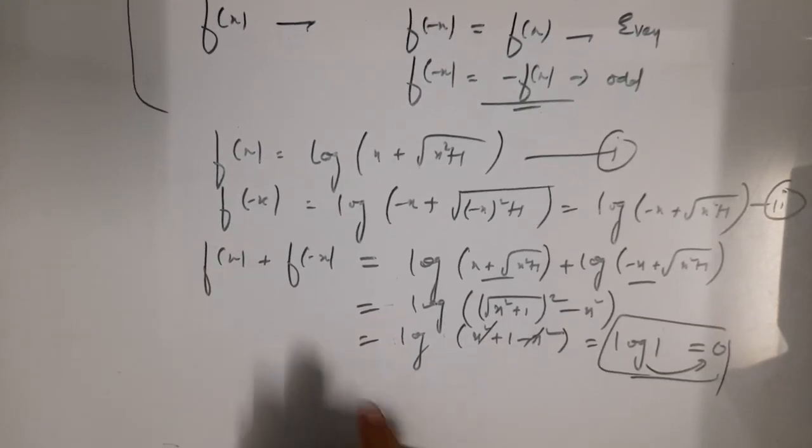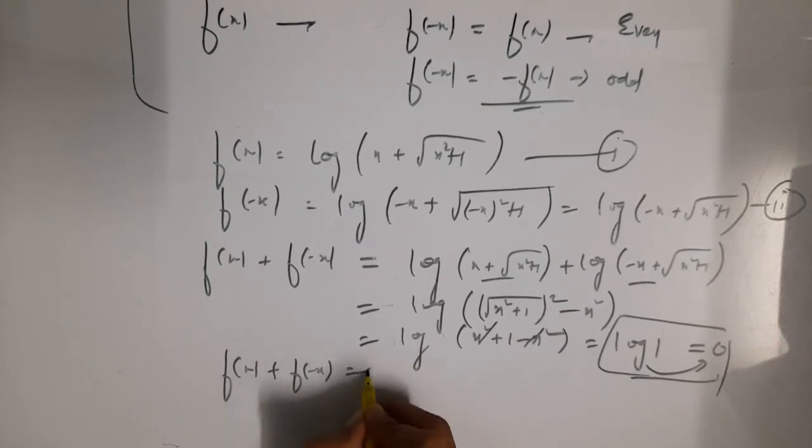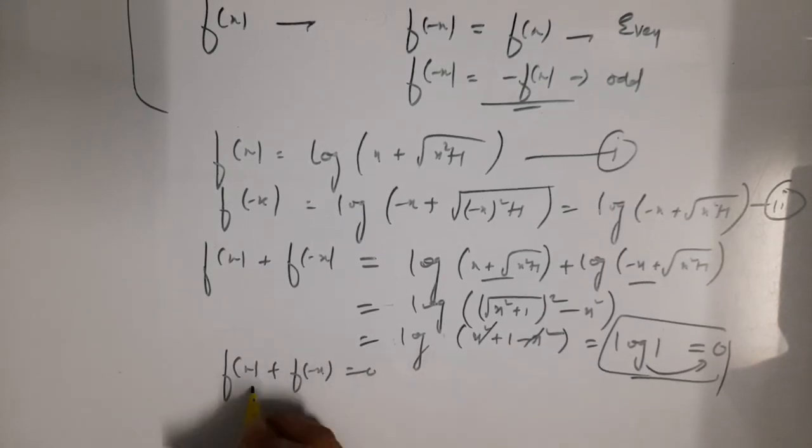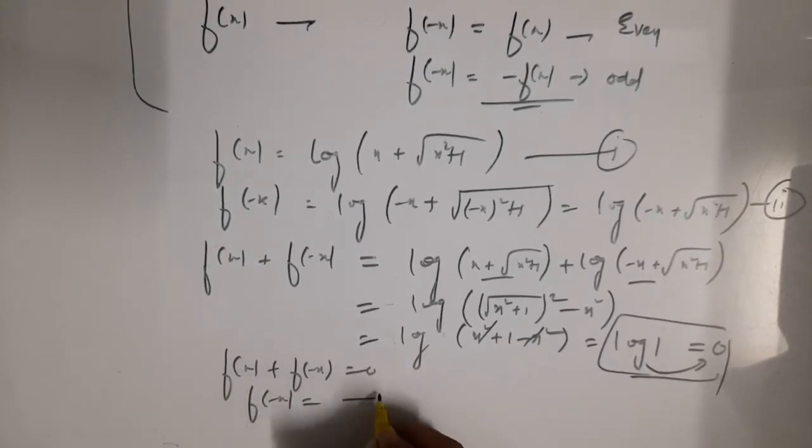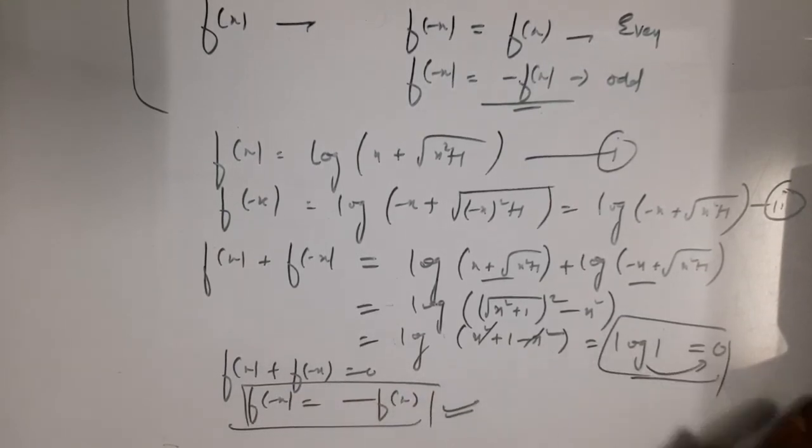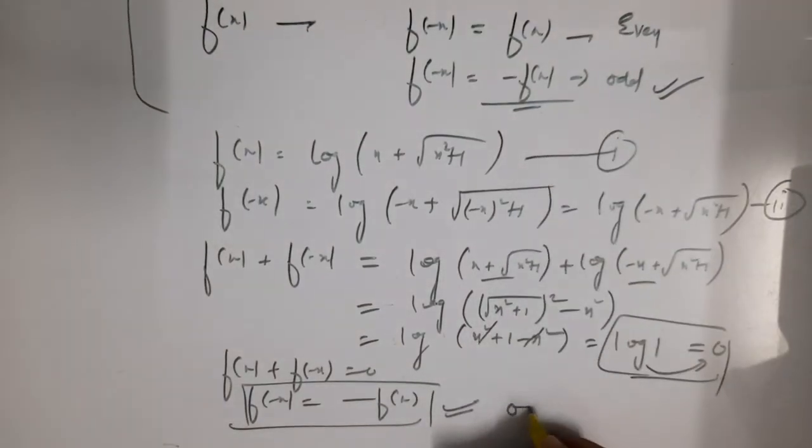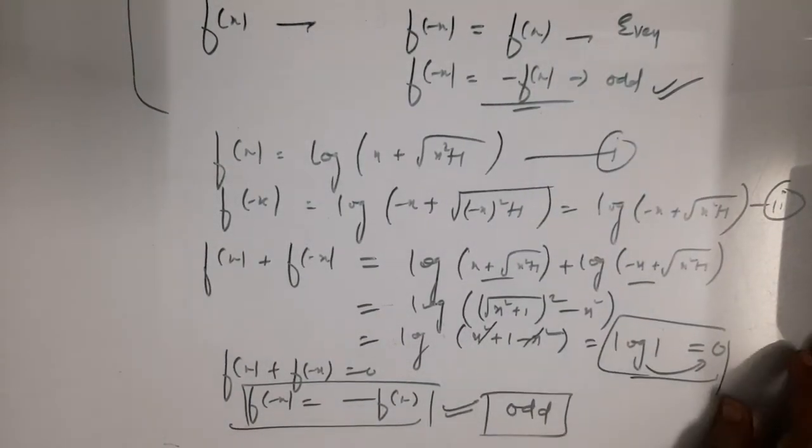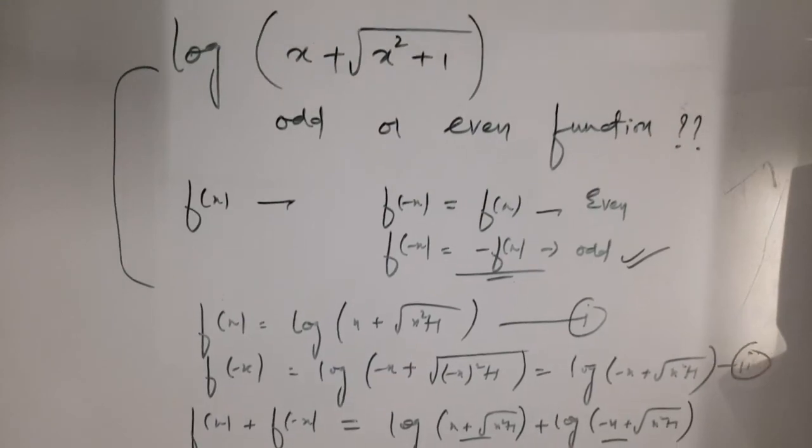So one thing is very clear what we got here: f x plus f minus x equals zero. That means f of minus x is nothing but minus f of x. And since we know that this kind of function is odd function, so our answer is odd function. Thank you.